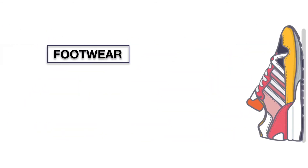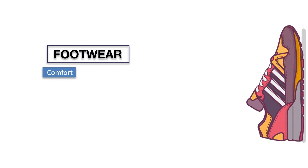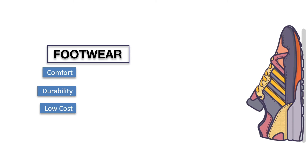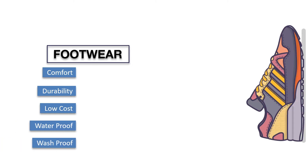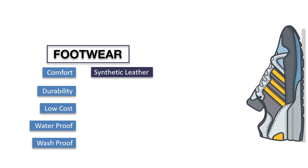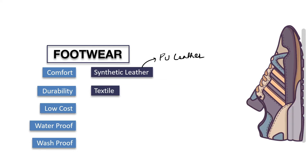Next is footwear. The product should have user comfort, durability, it should be cost effective, and in certain cases we'll have to consider it to be waterproof and wash-proof as well. This can include materials like synthetic leather — also called PU leather — textile, synthetic rubber, or foam.